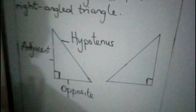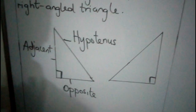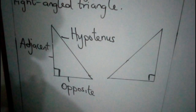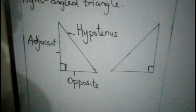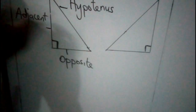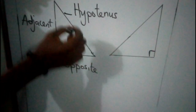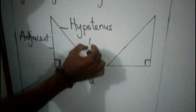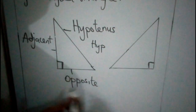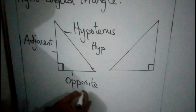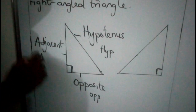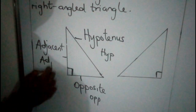So this now will help us go to the formula. The short form of hypotenuse I call HYP. The short form of opposite I call OPP. And the short form of adjacent I call ADJ.